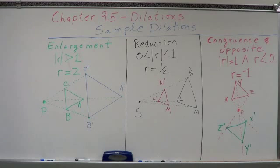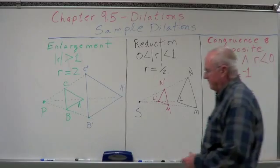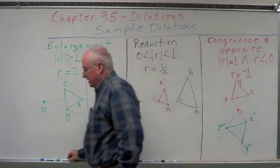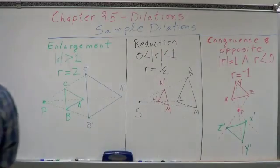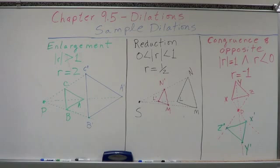There are your examples of enlargement, reduction, and congruence with an opposite. Dilations are one of the simplest transformations if you know all the points, maintain them, and apply your scale factor appropriately.